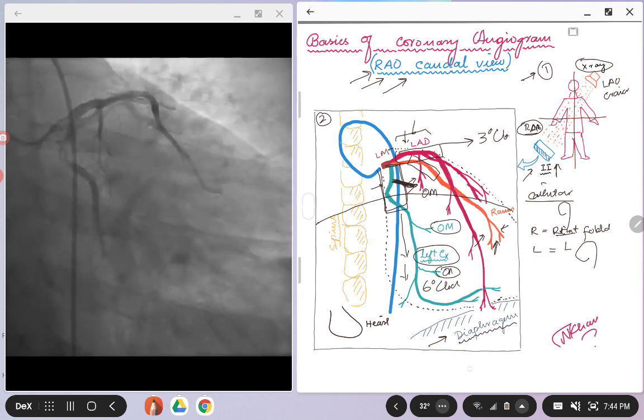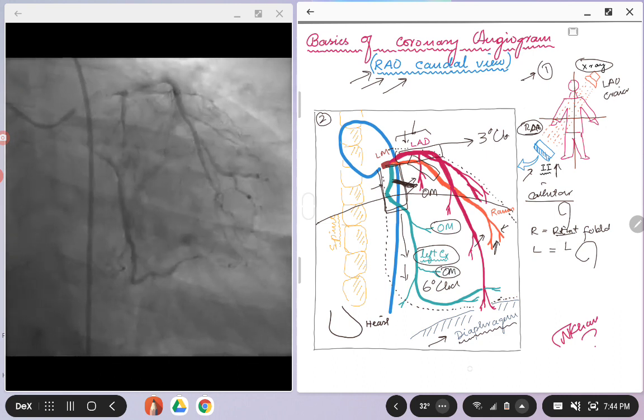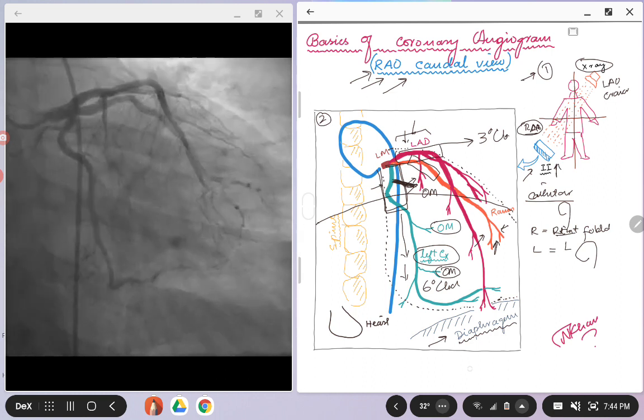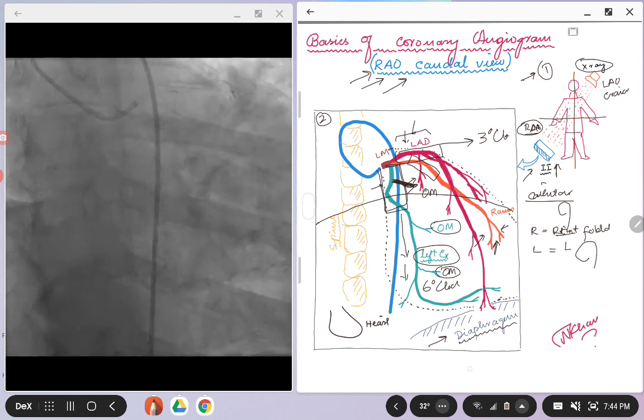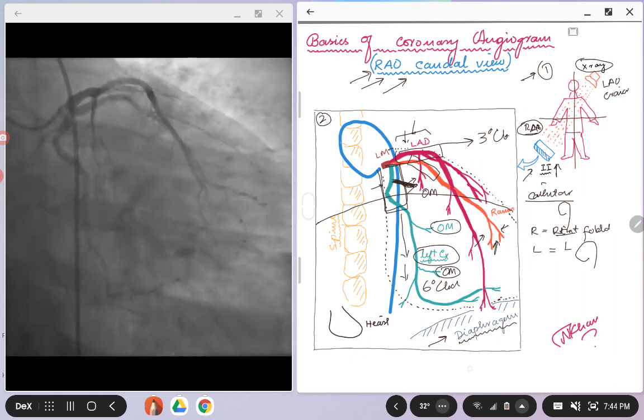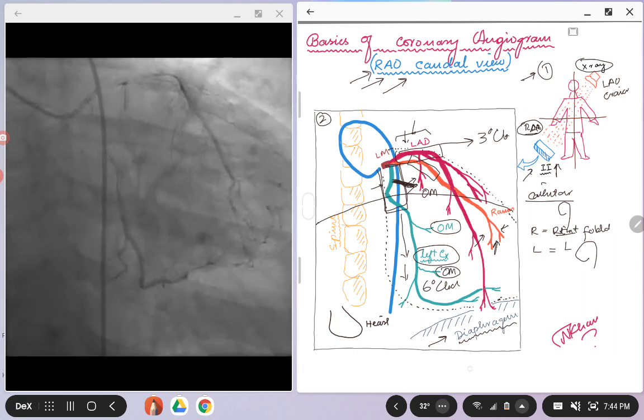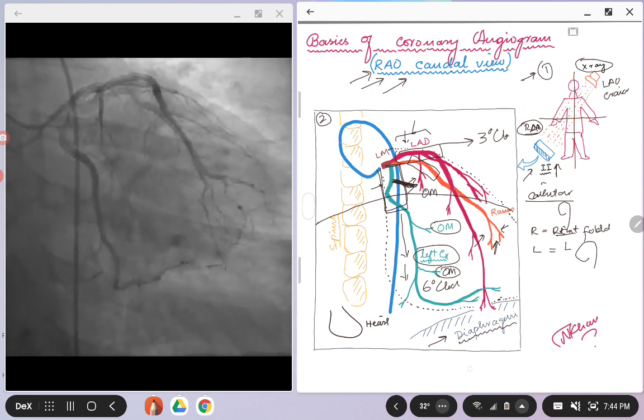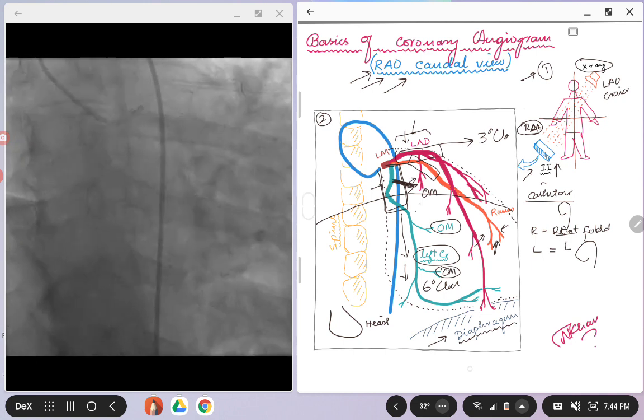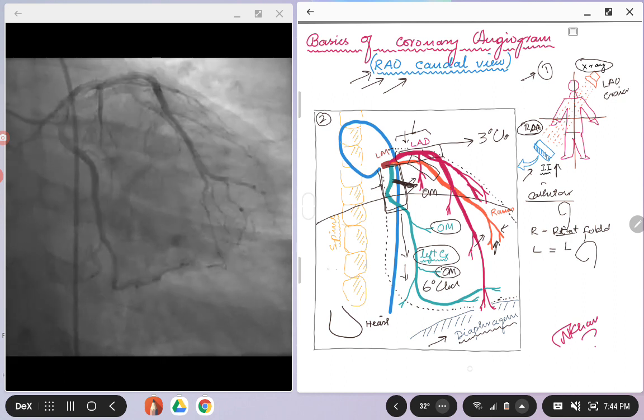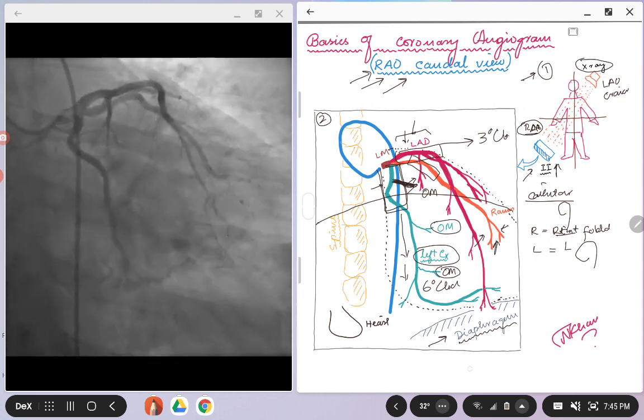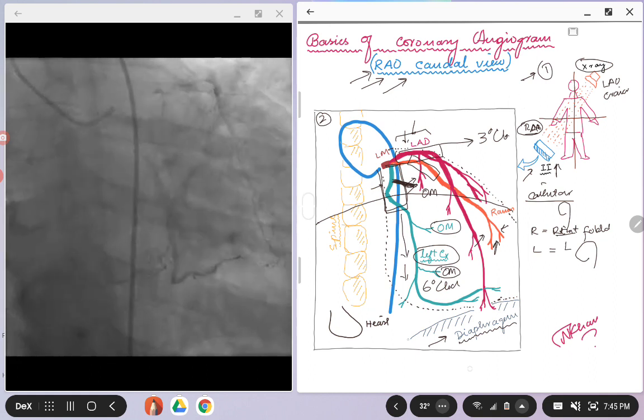So this is your coronary anatomy. And if you want to get more steep views and move the eye more towards the caudal and the rightward direction, you can open up these arteries even more as compared to the cine loop shown on the left.